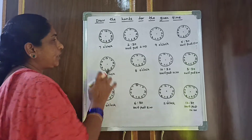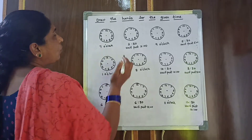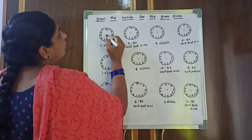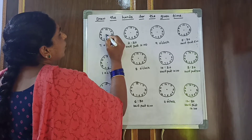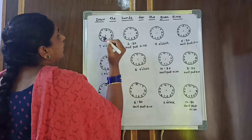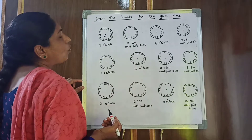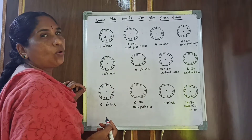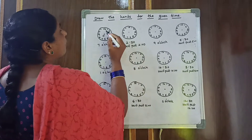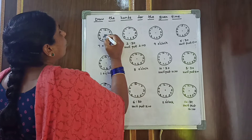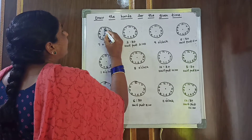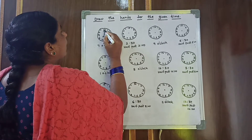So 7 o'clock — 7 is the hour hand, and the hour hand is the short hand. O'clock means 12, so the long hand you draw on 12. Now it is 7 o'clock. Is it clear children?